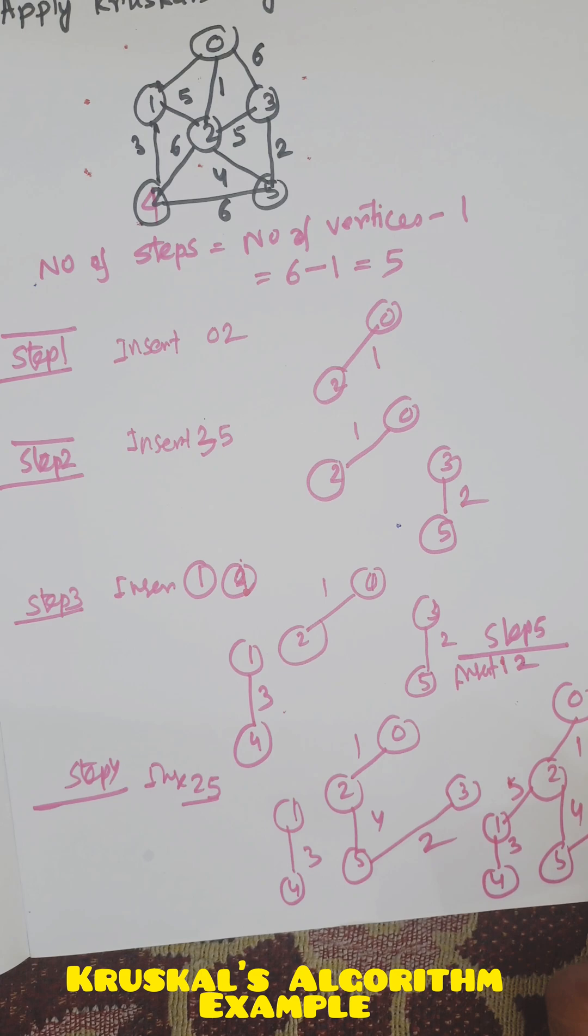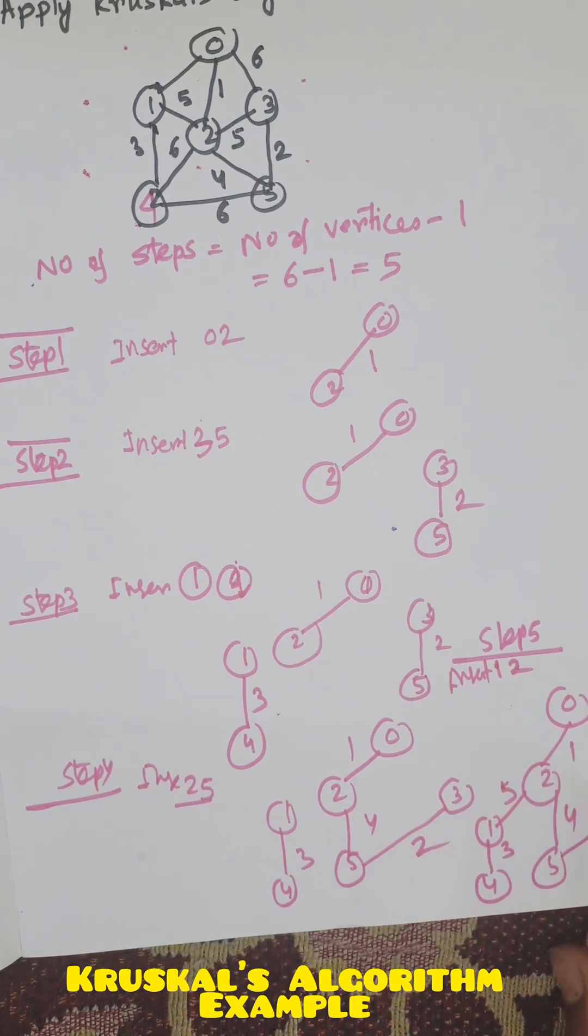So total cost of the spanning tree is 1 plus 2 plus 3 equals 6, plus 4 equals 10, plus 5 equals 15.